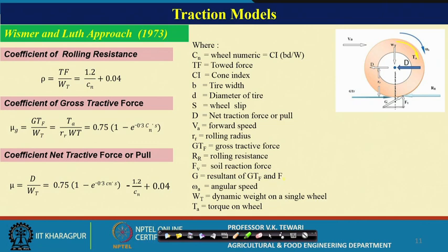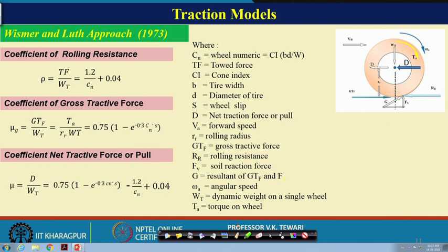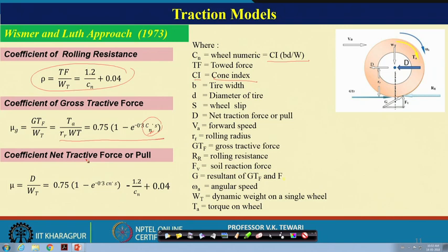Several scientists have developed traction models to find coefficients of rolling resistance, gross traction, and net traction. The Bismarck and Luth (1973) model gives equations for rolling resistance and gross traction. It uses a wheel numeric Cn = ci·b·d / (y·W), where ci is the cone index, b is tire width, d is tire diameter, y is tire section height, and W is wheel load. The net tractive force is gross traction minus rolling resistance.